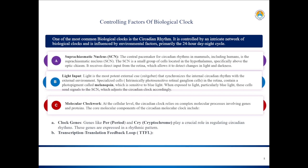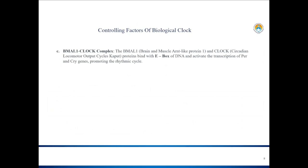Molecular clockwork: at the cellular level, the circadian clock depends on molecular processes involving genes, proteins, and a feedback loop. The core molecular components are clock genes, specifically the period and cryptochrome genes. Proteins such as BMAL1 (brain and muscle ARNT-like protein 1) and CLOCK (circadian locomotor output cycles kaput) bind together, form a complex, and that complex binds to the promoter region called the E-box present on the DNA.